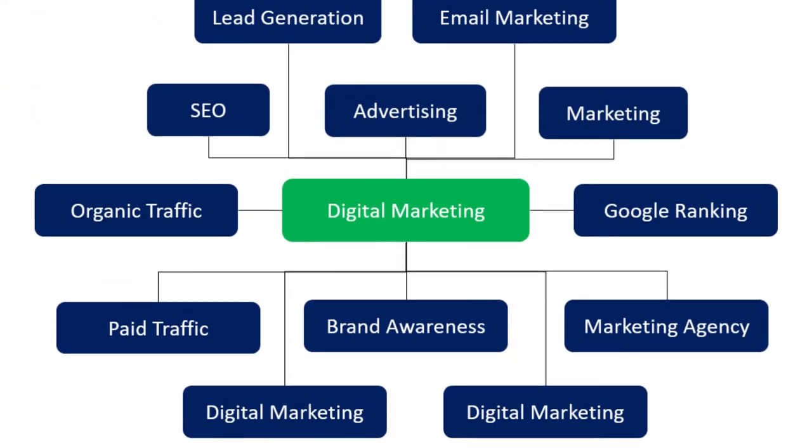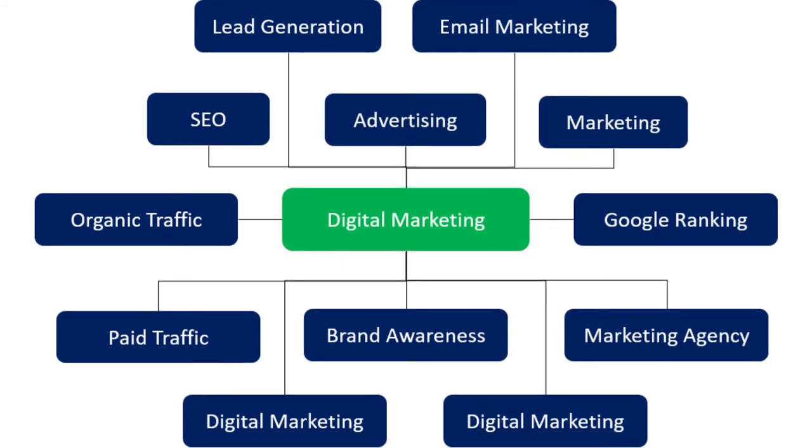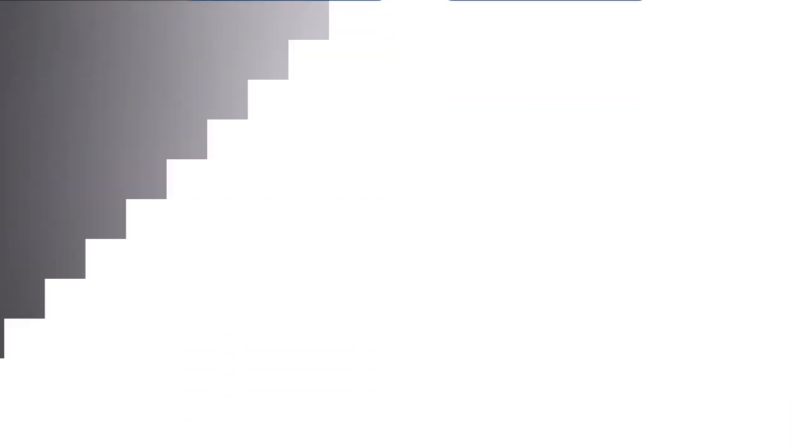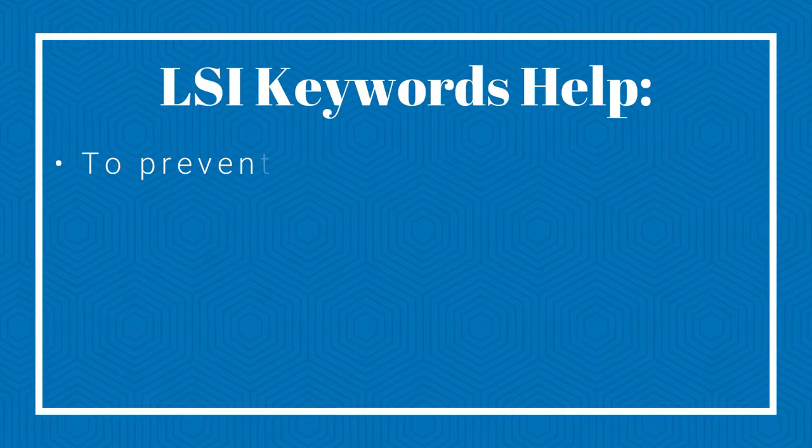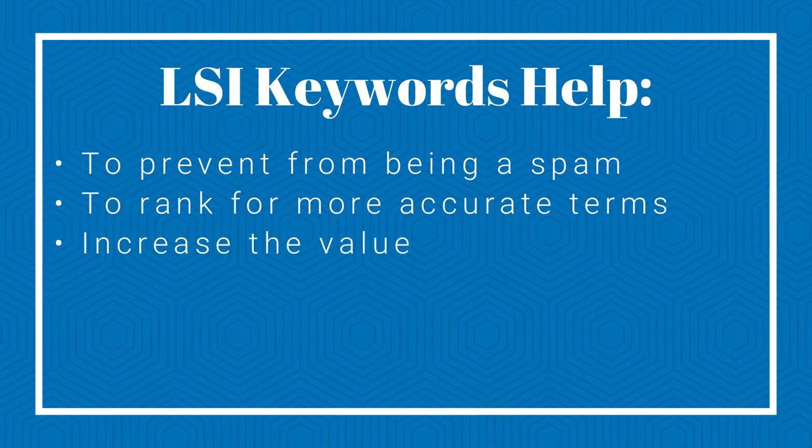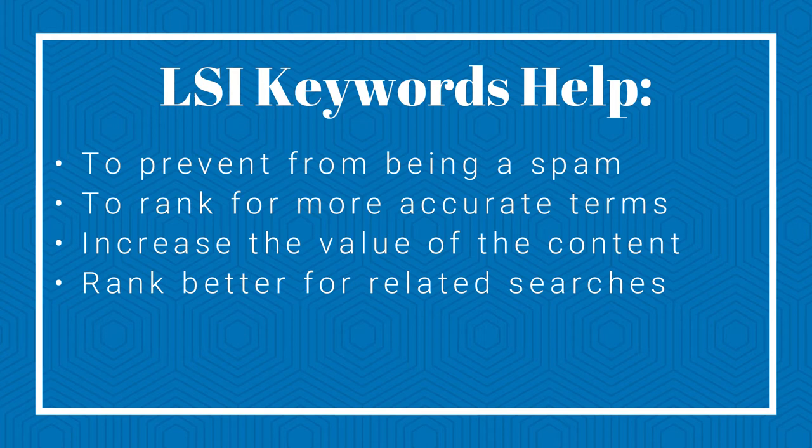But on top of targeting the right keywords, you should be also focusing on latent semantic keywords that help Google to better understand what your content is about and helps you and your readers to provide more comprehensive content as that is what Google is looking for. Using latent semantic keywords is the way how you should start thinking about creating content as you cannot just simply focus on one keyword or phrase, but rather the topic itself and what information people are searching for. Because in the recent Google research paper they explained how Google analyzes words frequently occurring together to understand the content main topic and user intent. Thus, from these metrics we can conclude that LSI keywords are important for SEO and using them correctly brings benefit for both SEO and user experience as LSI keywords helps to prevent from being spam, helps to rank for more accurate terms, increase the value of the content and rank better for related searches.